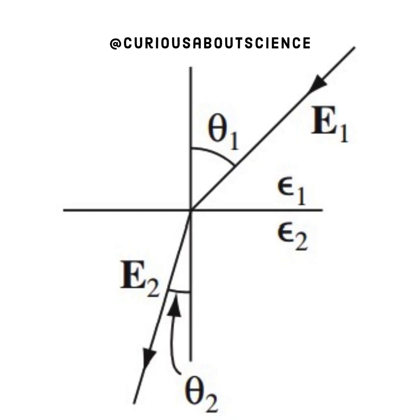A quick review of the diagram. We see on the upper half of the plane we have a field E1 incident on the plane at angle theta 1 and it has permittivity epsilon 1.